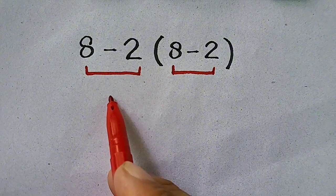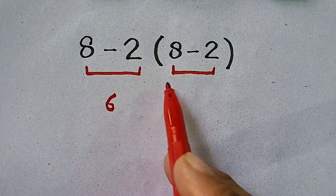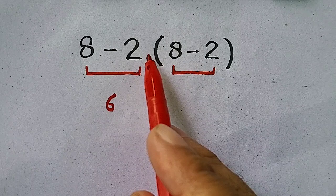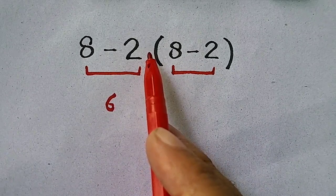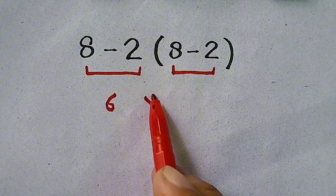Here 8 minus 2 will be equal to 6. And here is no symbol, neither plus nor multiplication. So where there is no symbol, we will use multiplication.